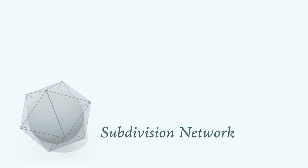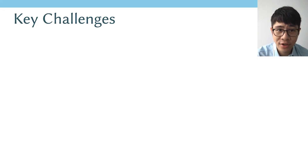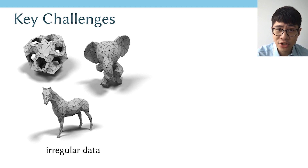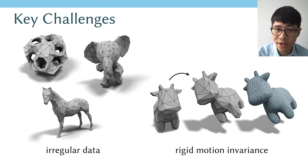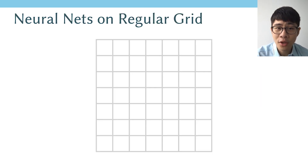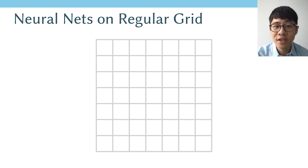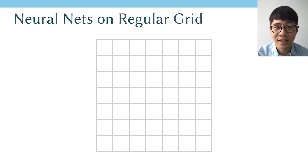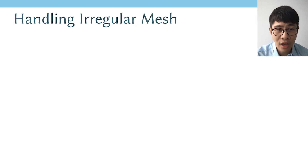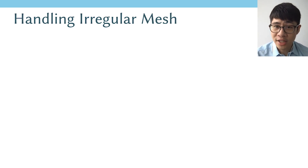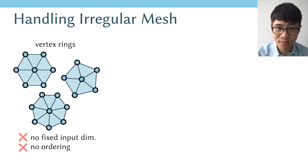Now let's talk about the subdivision network and two key challenges. First, we need to handle the irregular representation of triangle meshes. Defining a machine learning model on images relies on the regular grid structure — for example, image convolution relies on each pixel having a fixed number of neighbors. On triangle meshes, we don't have such regular structure. Generalizing convolution to vertex neighbors means we don't have a fixed number of neighbors and have no canonical ordering between them.